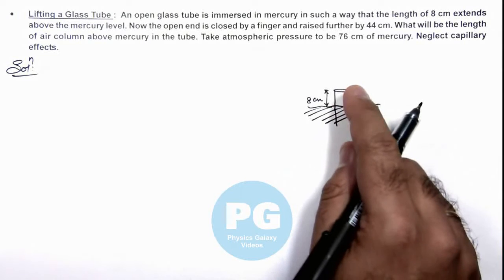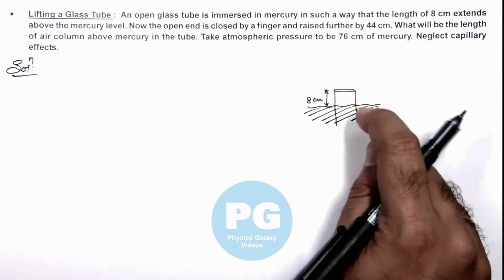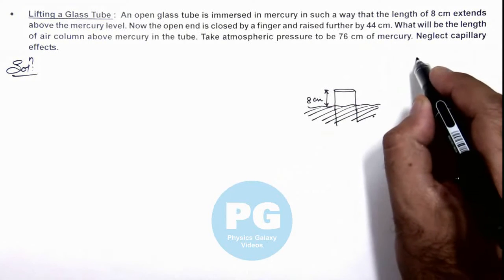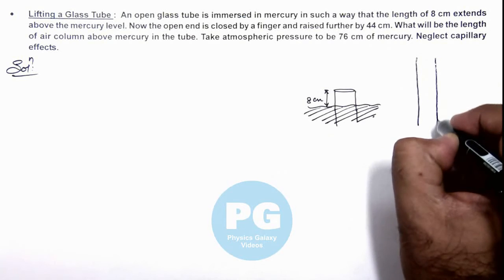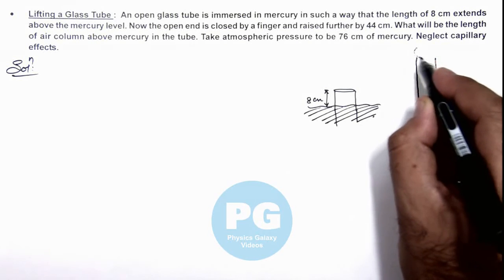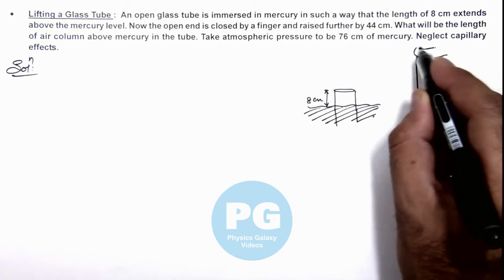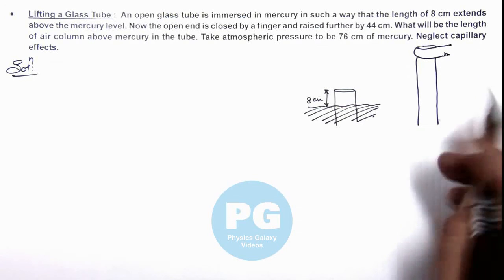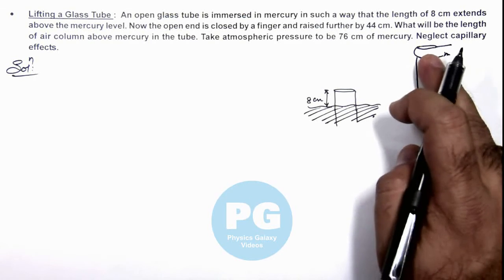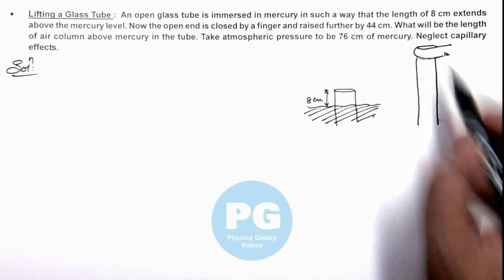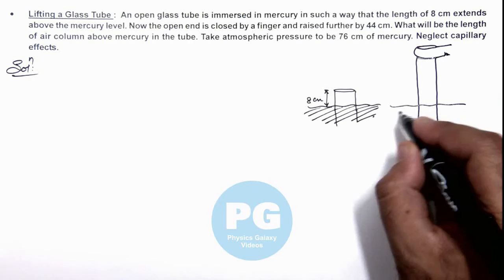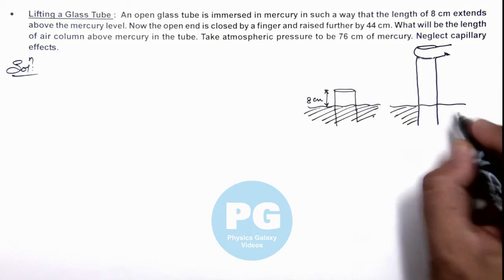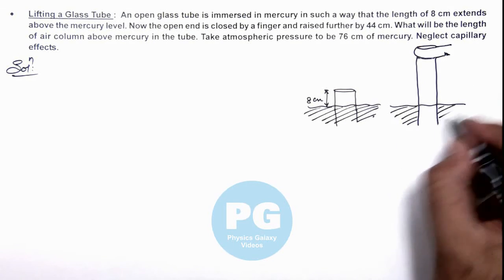If it is closed by a finger and pulled up, the situation would be like this. Here we can draw a situation, this is a finger with which the tube is closed and lifted up. Then in this situation the level of mercury in the tube will also be lifted.